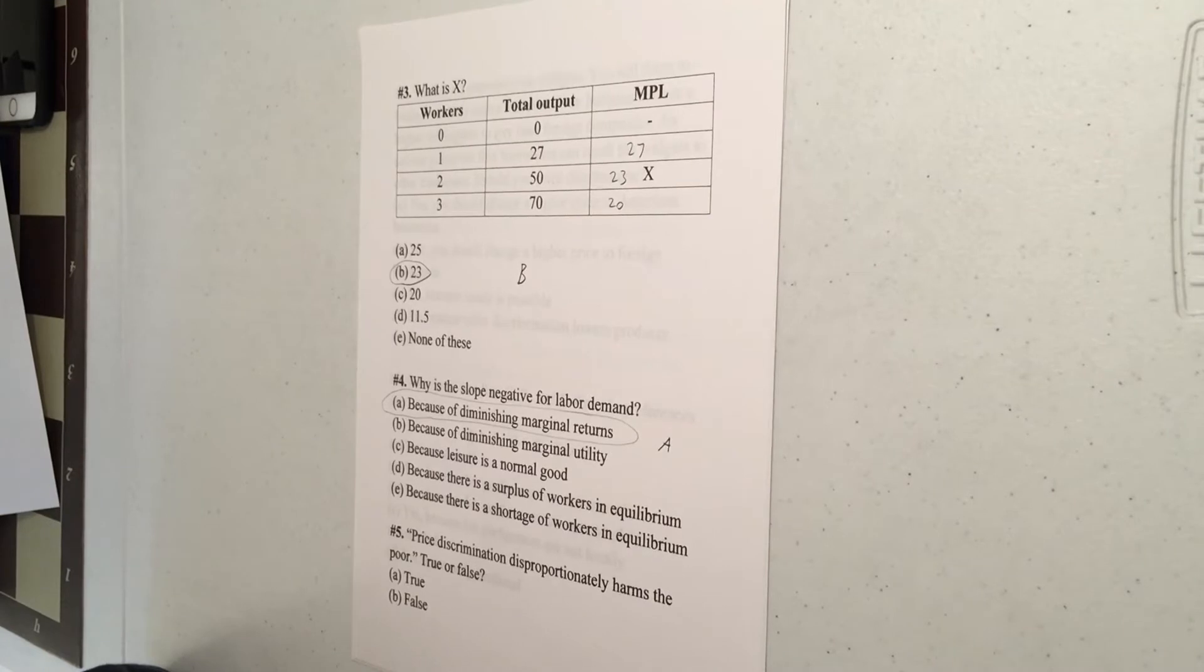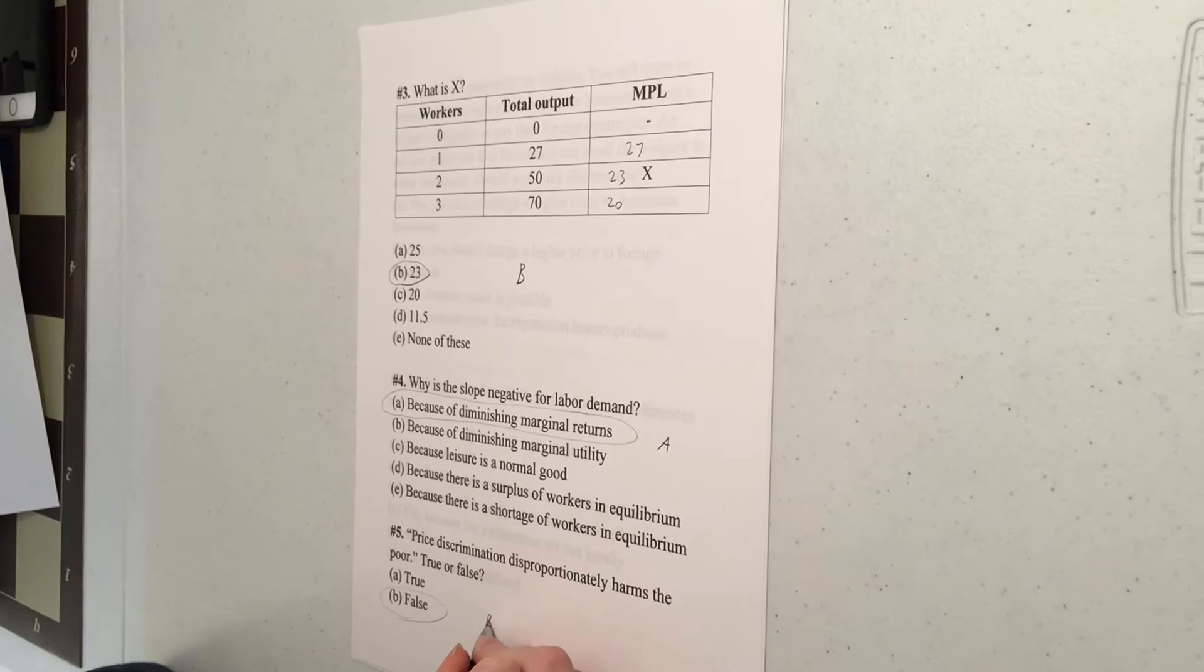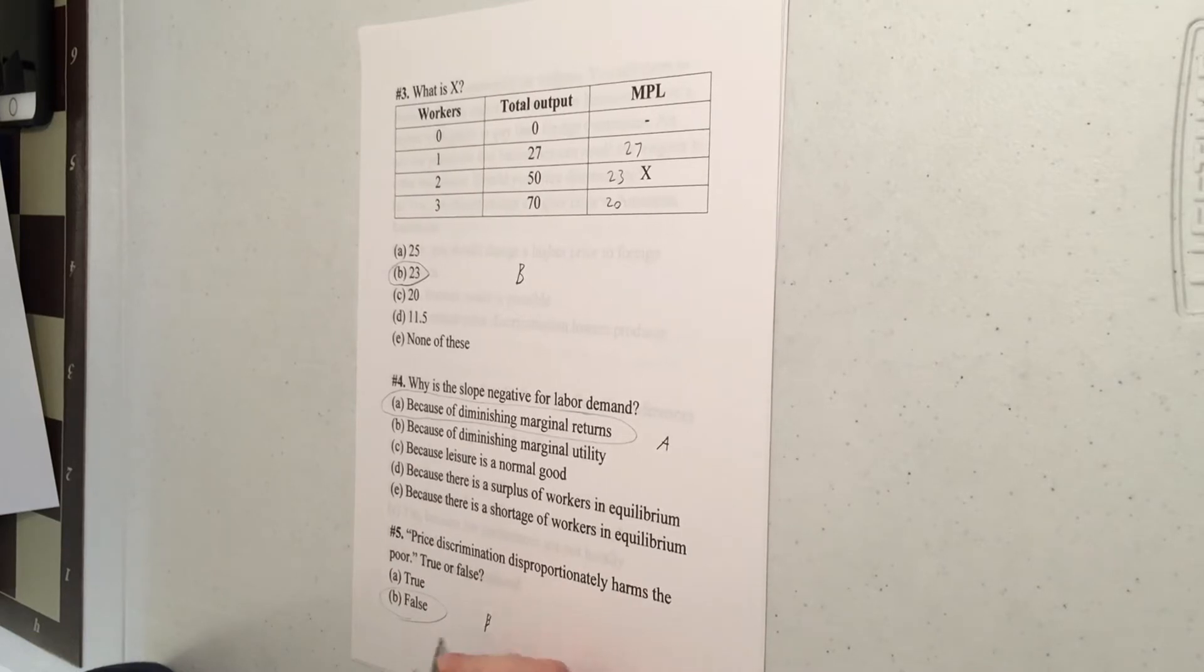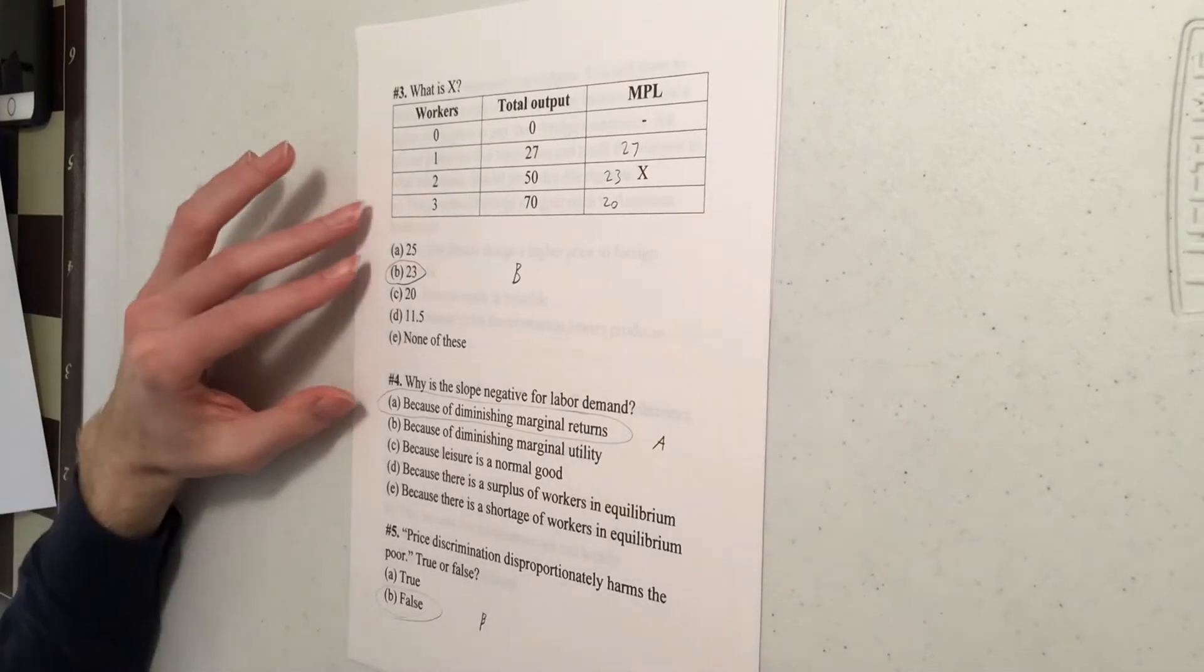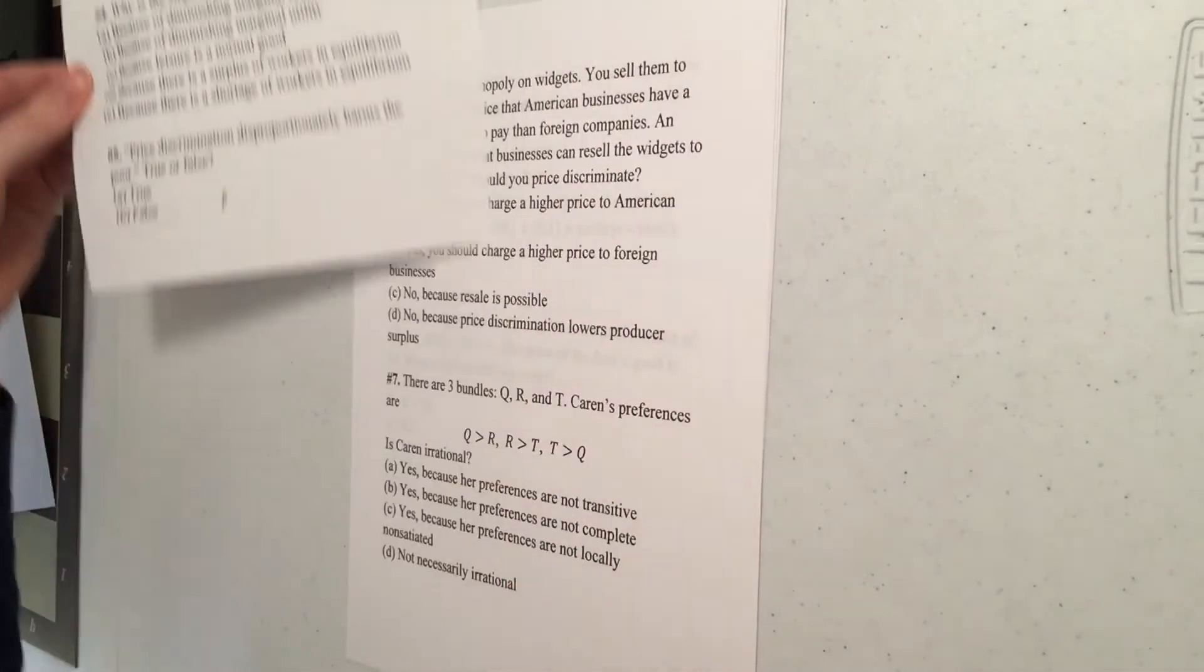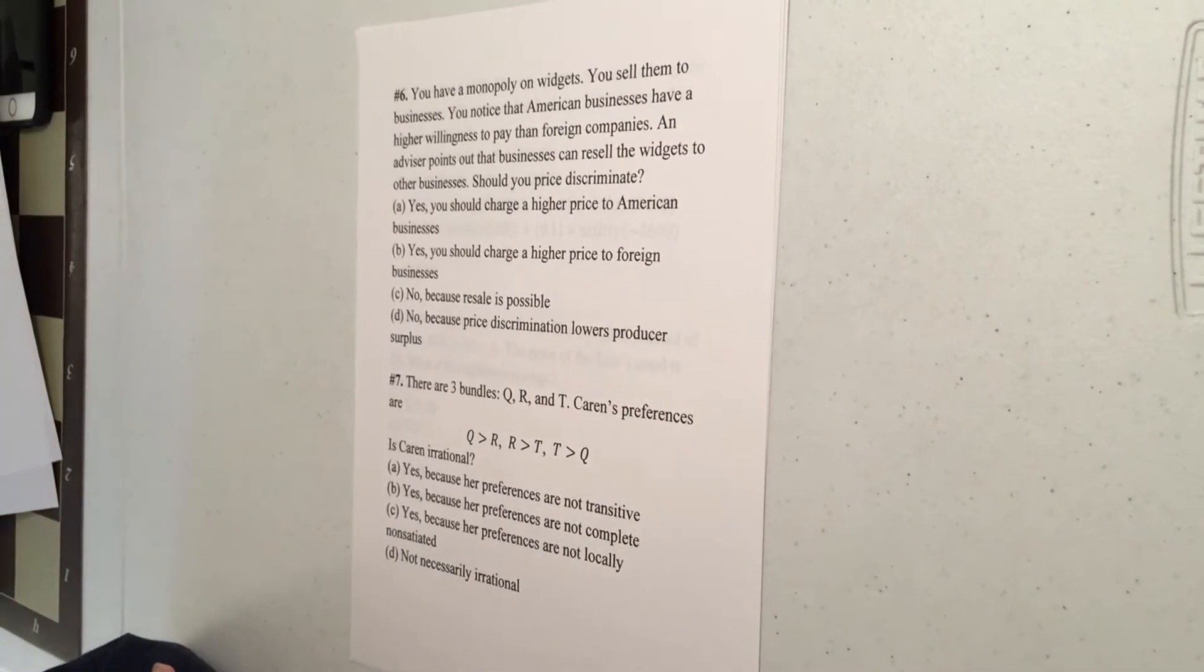Number five. It's another easy one. Price discrimination disproportionately harms the poor. That is false. We actually saw many examples in chapter 11 where actually price discrimination helps the poor. Typically, though not always, typically the poor have a lower willingness to pay. As a result, the firm is going to try to charge them a lower price. Of course, they benefit from the lower price. So oftentimes price discrimination helps the poor.